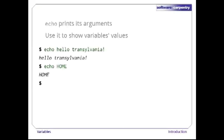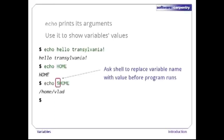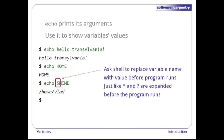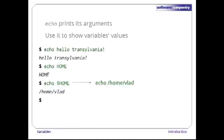Let's try 'echo $HOME'. The dollar sign tells the shell to replace the variable's name with its value. This works just like wildcards — the shell does the expansion before running the program we've asked for. Thanks to this expansion, what we actually run is 'echo /home/vlad', which shows us the variable's value.